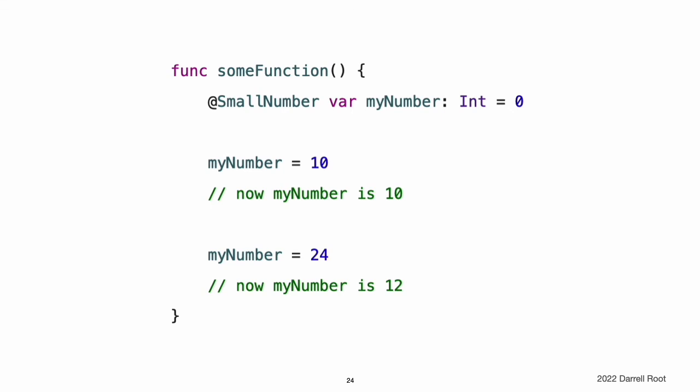Local constants and variables are never computed lazily. You can apply a property wrapper to a local stored variable, but not to a global variable or a computed variable. For example, in the code below, myNumber uses SmallNumber as a property wrapper. Like when you apply SmallNumber to a property, setting the value of myNumber to 10 is valid. Because the property wrapper does not allow values higher than 12, it sets myNumber to 12 instead of 24.